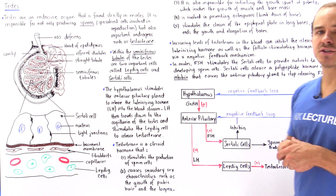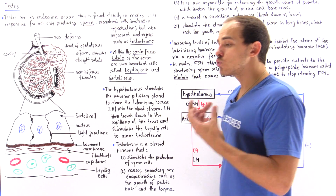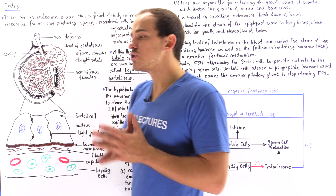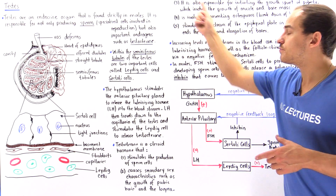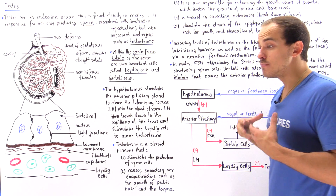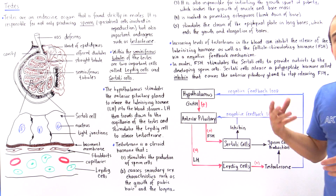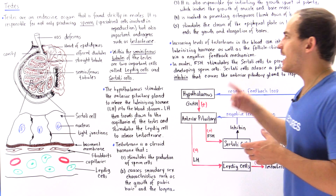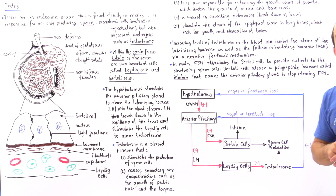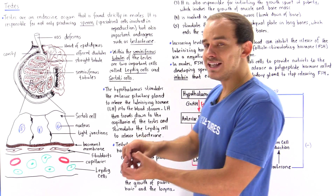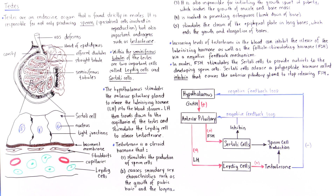Testosterone is also responsible for initiating the process of puberty — our growth spurt — which involves the growth of not only our muscle but also our bone. It increases bone and muscle mass during puberty. It is also involved in preventing a condition known as osteoporosis, which is essentially the breakdown of our bone matrix as a result of old age. Additionally, testosterone stimulates the closure of our epiphyseal plate found in our long bones, so it is involved both in elongating our bone and in ending the process of elongation.